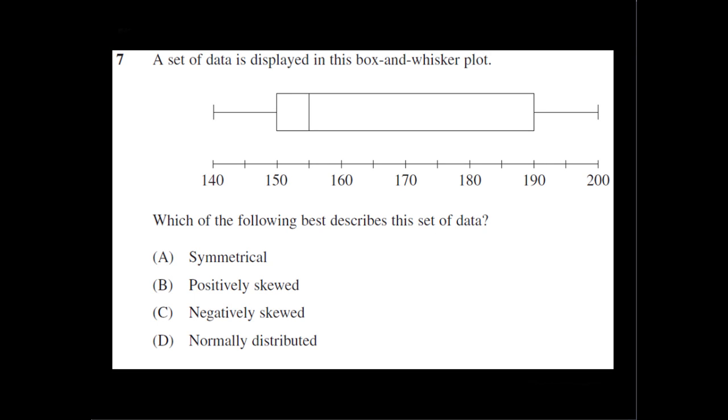Okay, question seven. We're told a set of data is displayed in a box-and-whisker plot. So that's the box-and-whisker plot there. And we're asked which of the following best describes this set of data?